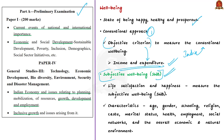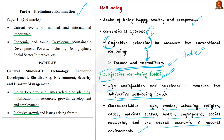In subjective well-being, we use variables like life satisfaction and happiness. These variables go beyond the objective criterion of income and expenditure. Subjective well-being includes characteristics like age, gender, schooling, religion, caste, marital status, health, employment, social networks, and the overall economic and natural environment — all of which play a huge role in understanding a person's subjective well-being.